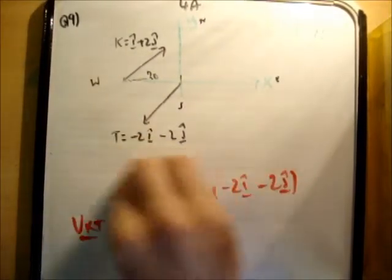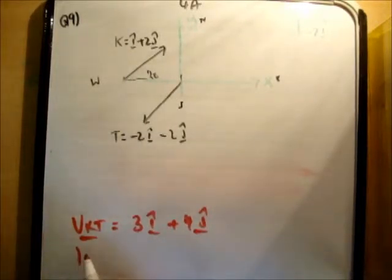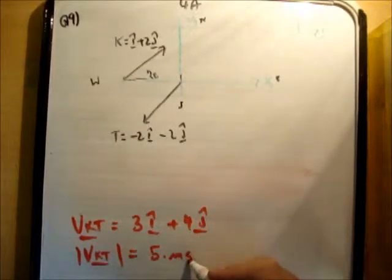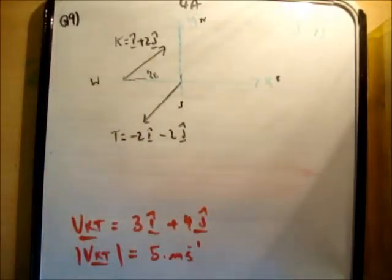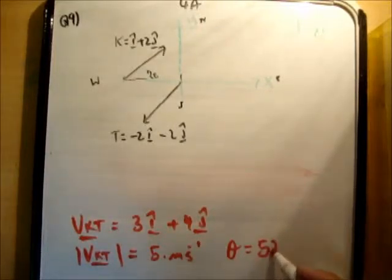The next part of the question says find the shortest distance between them in subsequent motion. So first we're going to find the magnitude of the vector vk-t. This is just Pythagoras. So it's the square root of 3 squared plus 4 squared, which turns out to be 5. So the overall speed of the vector vk-t is 5 metres per second. And to find its direction, inverse tan of 4 over 3. So the angle theta is 53 degrees.